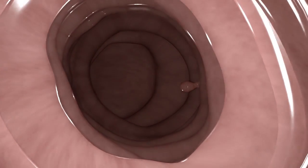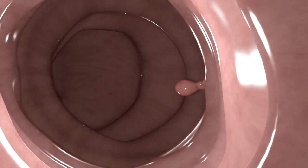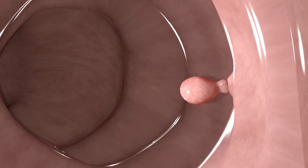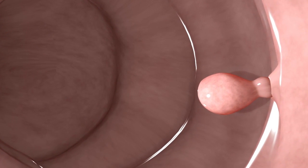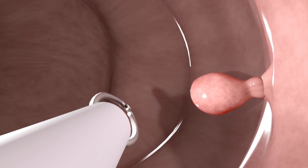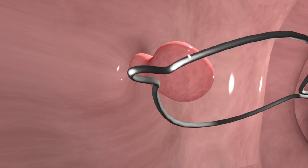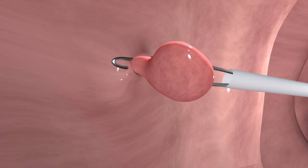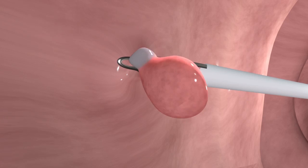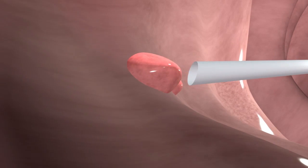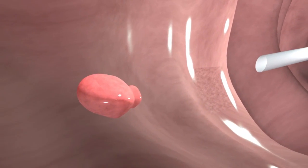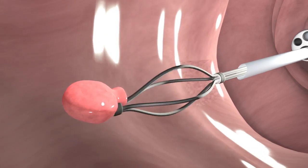Certain types of growths and polyps have a chance of turning into cancer. During a colonoscopy, the gastroenterologist will be able to remove polyps and tissue samples using specialized instruments. Usually, a snare is used to cauterize and cut off the polyp from the colon wall. The polyp is then removed through the biopsy channel. Removal of polyps is painless because there are no nerves in the lining of the colon.